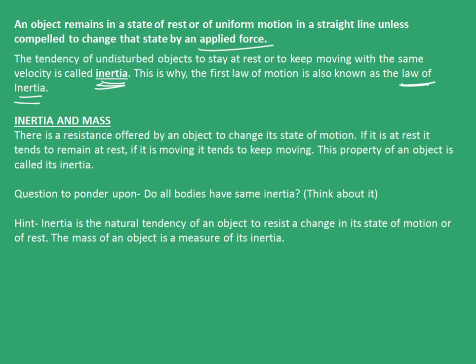Now, what is inertia? There is a resistance offered by an object to change its state of motion. If the object is at rest, it tends to remain at rest. Now, if the object is moving, it tends to keep moving. This property of object is called inertia.